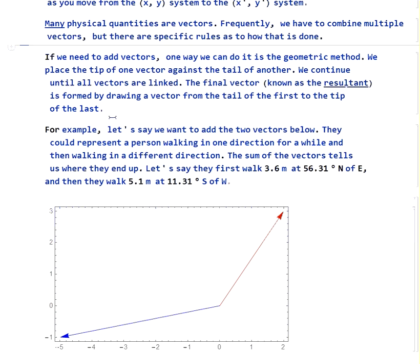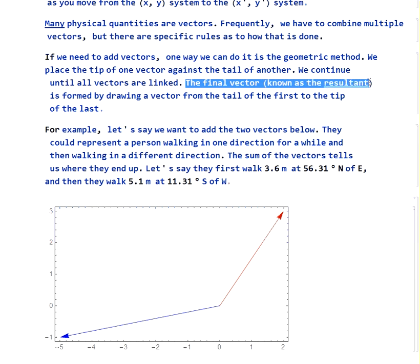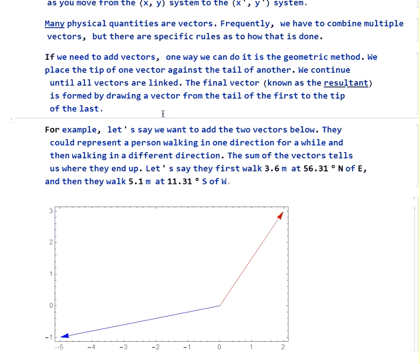The first thing we're going to learn is how do we add vectors. And one way to do it that is not a lot of fun is the geometric method. There we place the tip of one vector against the tail of another. We keep doing that until all the vectors are linked, and then the final vector, which is our vector sum, or is known as the resultant, will be formed by drawing a vector from the tail of the first to the tip of the last.